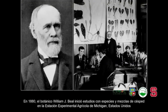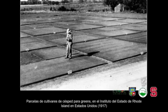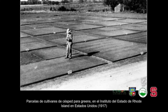El botánico William Budd en 1880 comenzó a estudiar especies y mezclas de césped en la Estación Experimental Agrícola de Michigan en Estados Unidos, y después se inició una gran cantidad de investigación para el desarrollo de nuevas variedades de césped adaptadas a las condiciones tan variables que tenemos en todo el planeta.